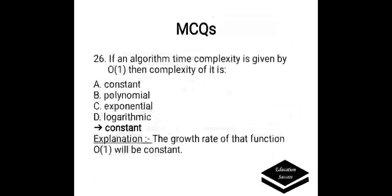If an algorithm's time complexity is given by O(1), then the complexity of it is: a) constant, b) polynomial, c) exponential, or d) logarithmic. Correct answer is constant. The growth rate of the function O(1) will be constant.